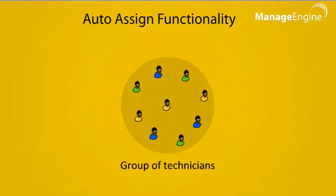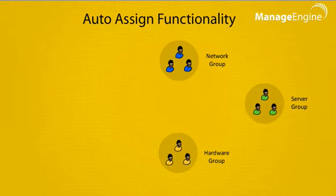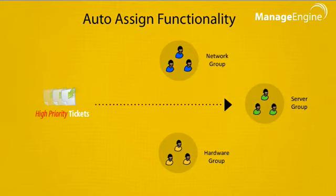Let's take another scenario where you want all the server-related high priority tickets to be equally handled by a group of highly skilled technicians. We can set up a business rule that all the server-related tickets with high priority should be assigned to the server level group.